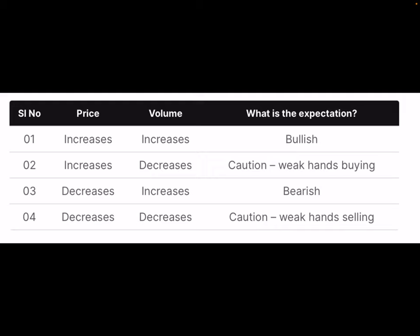What happens when both volume and price decrease, as indicated in the fourth row? Why is the price decreasing? Because market participants are selling. Are there any institutional sellers? Not likely. If institutional investors were selling, the volume would increase and not decrease. So a decline in price and a decline in volume means the price decrease is because of small retail participation and not really influential smart money selling. Hence it would help if you were cautious, as this would be a possible bear trap.